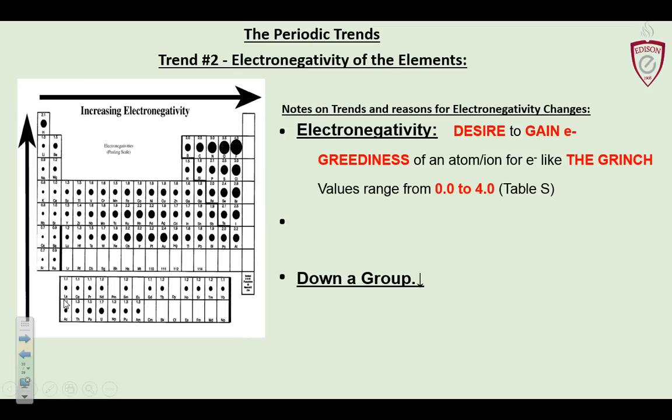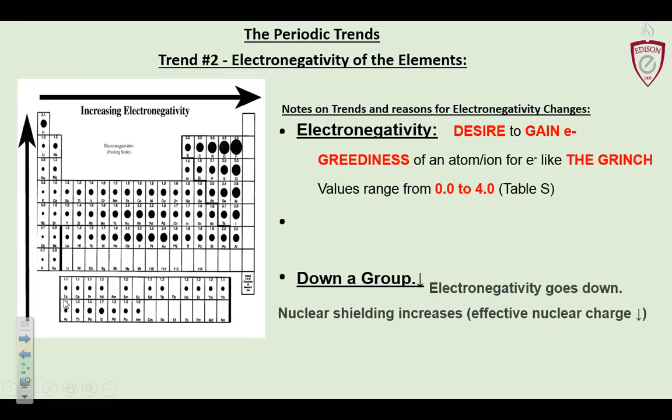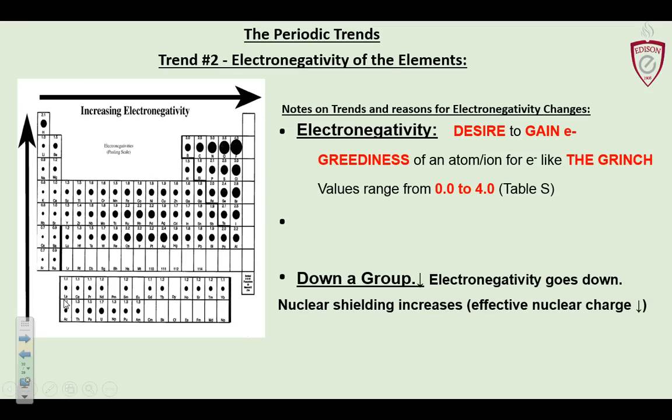As you go down a group, electronegativity goes down. Nuclear shielding increases — you have more and more layers of kernel electrons, so effective nuclear charge goes down. You just can't feel that electron from the outside atom as well. It's like two magnets that are further and further away from each other — they're not going to pull very fast. That's electronegativity.